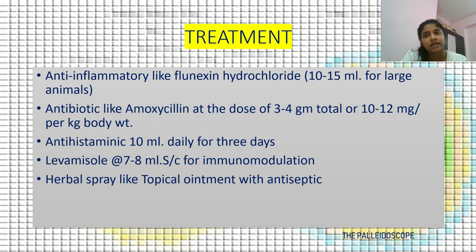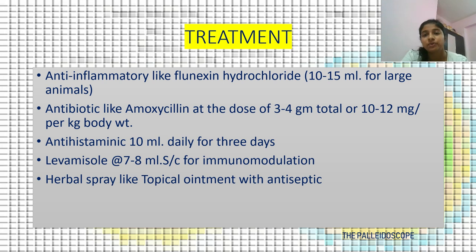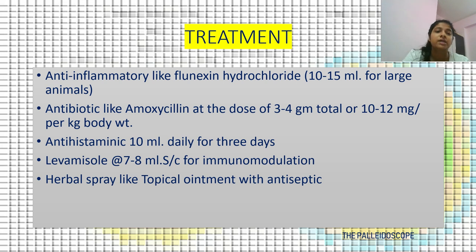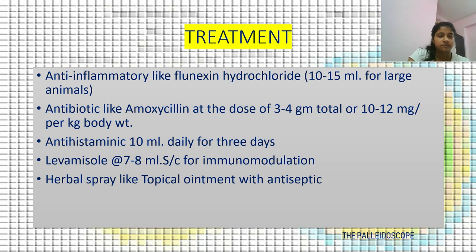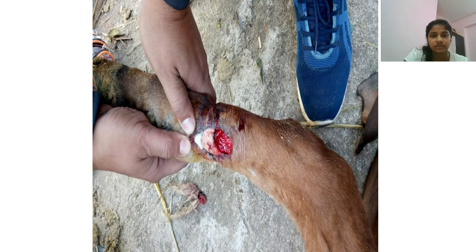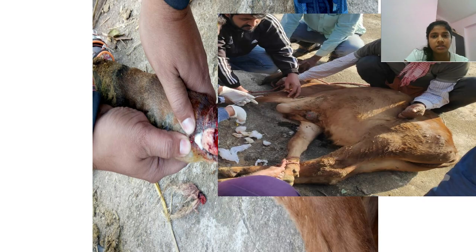Treatment: The preferred anti-inflammatory drug is clinexine hydrochloride at a dose rate of 10–15 ml per large animal. Antibiotic such as amoxicillin at dose rate 3–4 g total or 10–12 mg per kg body weight. Antihistamine 10 ml daily for 3 days. Levamisole at dose rate 7–8 ml subcutaneous for immunomodulation. Herbal spray or topical ointment with anti-inflammatory properties can also be used.